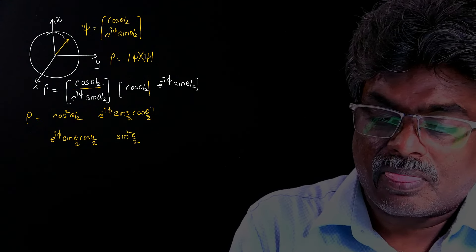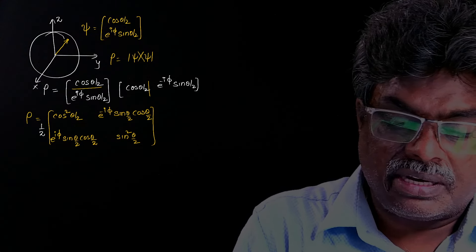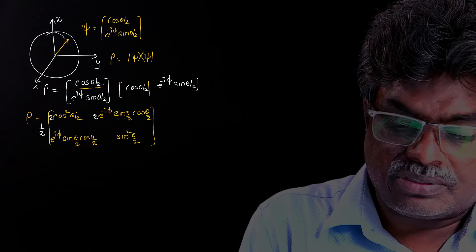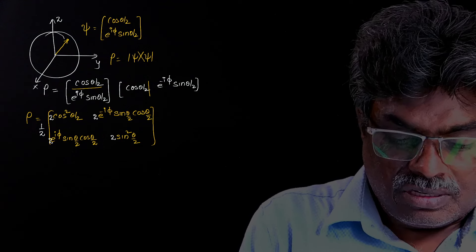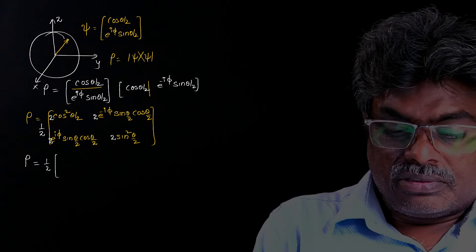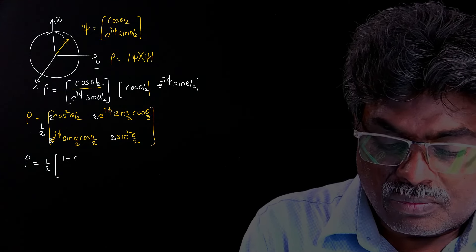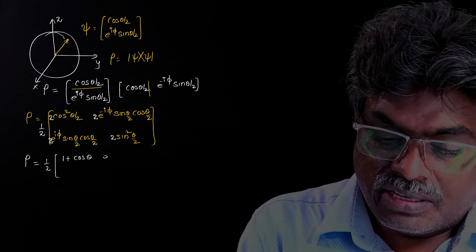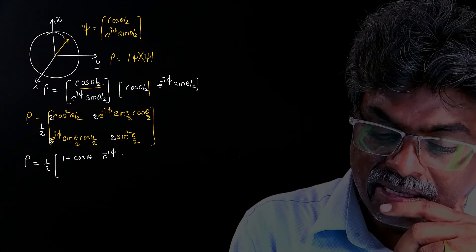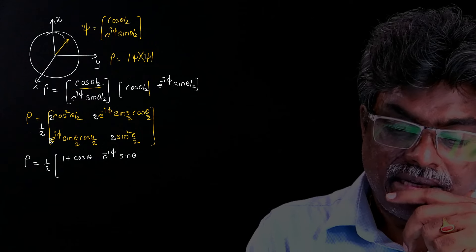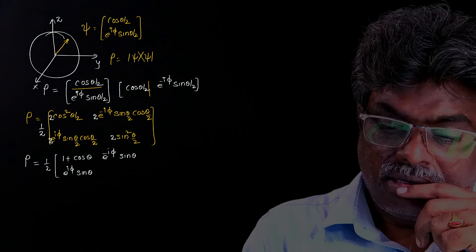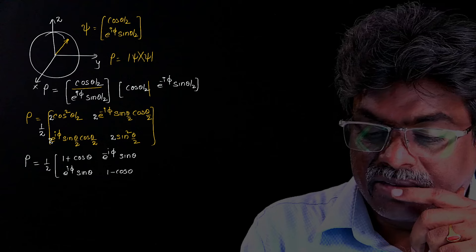Now I will take 1/2 outside and multiply every term by 2. So the density operator rho equals 1/2 times: 2cos²(θ/2) can be written as 1 plus cosθ; next, e raised to minus iφ times 2sin(θ/2)cos(θ/2) can be written as sinθ; then e raised to iφ sinθ; and 2sin²(θ/2) can be written as 1 minus cosθ.